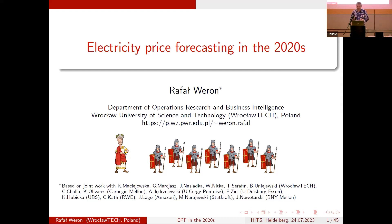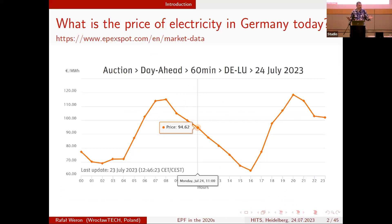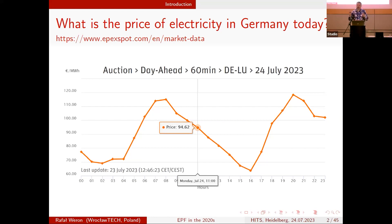Let's go into the details. We can ask ourselves: what is the price of electricity right now, or even in the next hour? This data is for the load period from 11 to 12 — so actually right now. What you see here is a curve of prices for today. But this is not really forecasting; it's already established — set the day earlier.